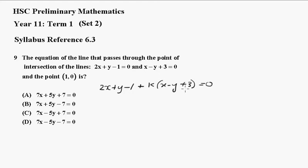It's bypassing solving simultaneously. So now we get to work out the value of k because we know the point (1,0) lies on this line. We simply substitute in x equals 1 and y equals 0.